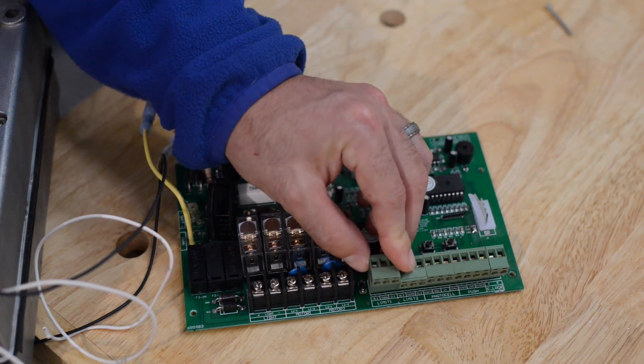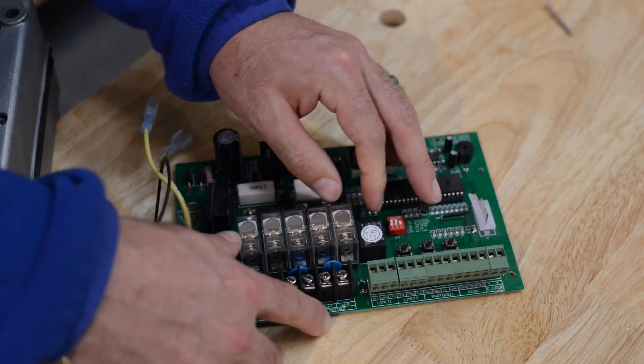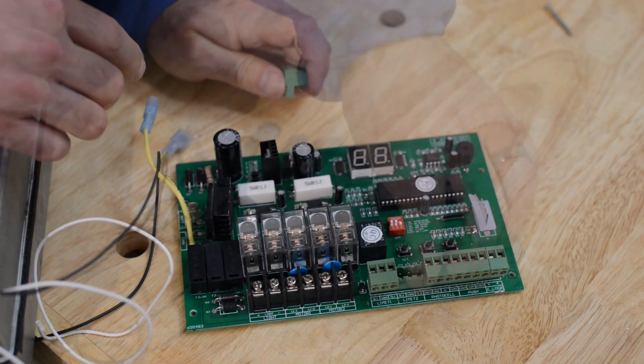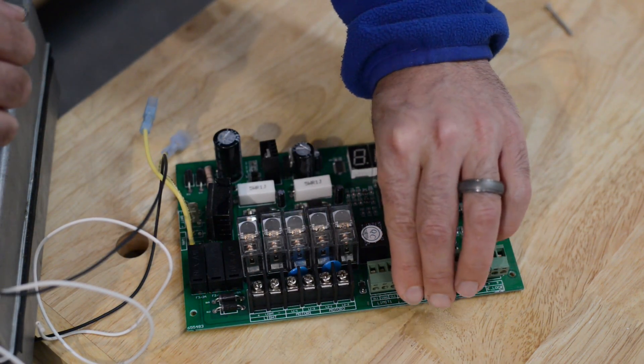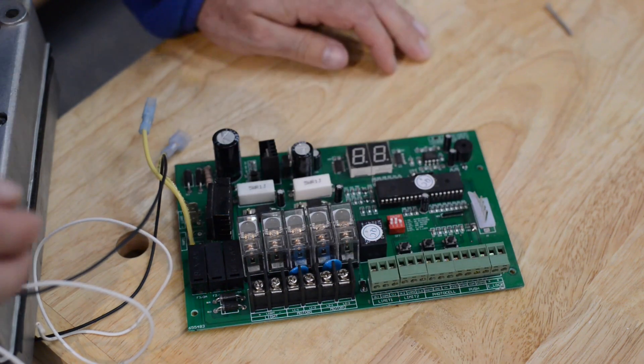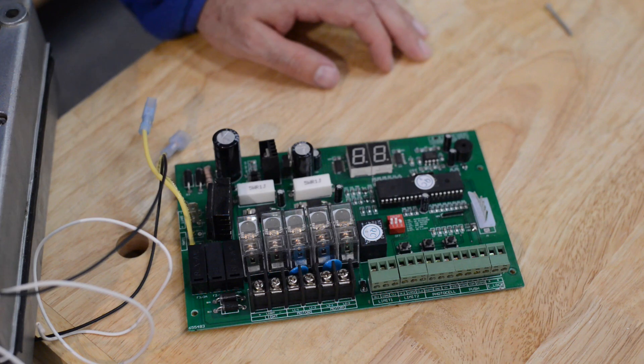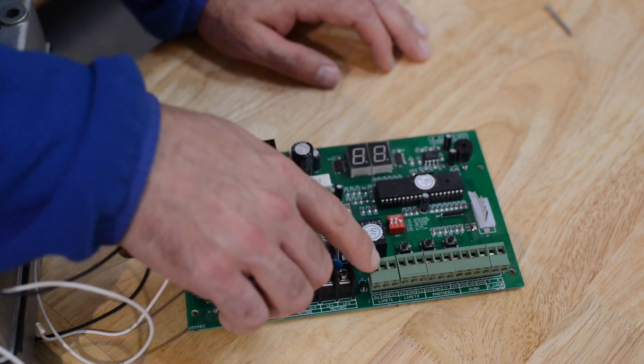You are going to repeat this same procedure for motor two and limit two. Once you have it wired up and you have double checked that you have the normally closed used on the limit switches. That you have the commons together and the center terminals.